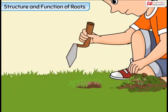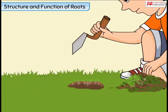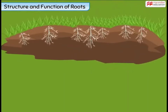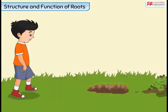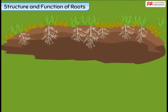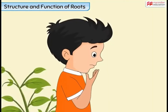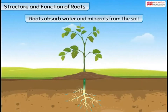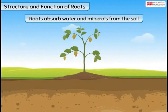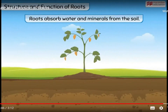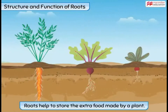Now look at this boy digging holes in the soil. While making the holes, the boy removed the roots of some grass plants. After a few days, he noticed that the plants whose roots were removed dried up and died. Roots absorb water and minerals for the plant from the soil. In the absence of roots, the plants could not get water and died. Roots of many plants such as carrot, beetroot and radish also help to store the extra food made by a plant.